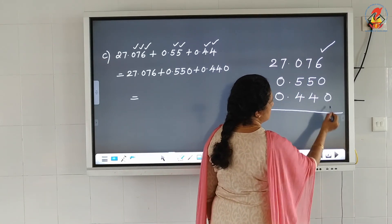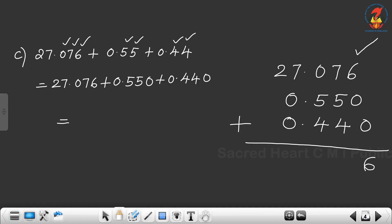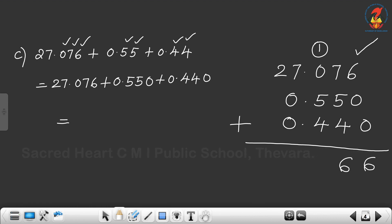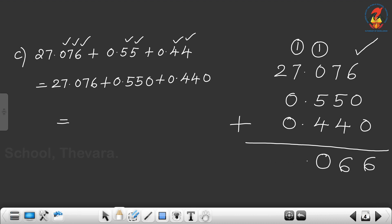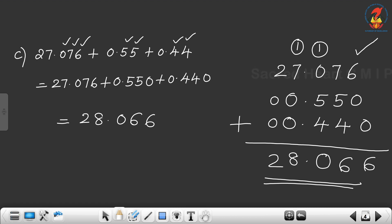6 plus 0 plus 0 is 6. Then 7 plus 5 is 12, plus 4 is 16 — write 6, carry over 1. Then 0 plus 5 plus 4 is 9, plus 1 carry is 10 — write 0, carry over 1. Put the decimal point. Then 0 plus 0 plus 0 plus 1 carry is 1. No tens digits, so put 0, then 2. The answer is 28.066.